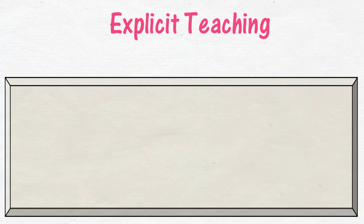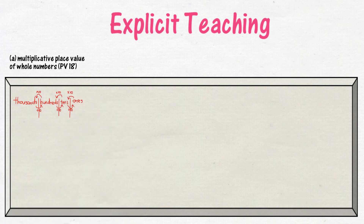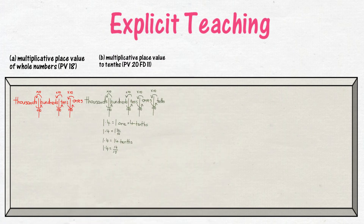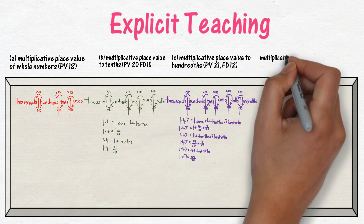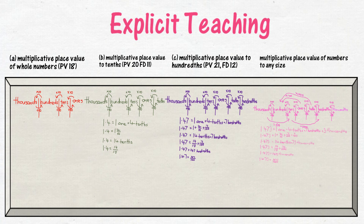Begin the explicit teaching using questioning at the lowest level of understanding, then proceeding through other levels. Using a different colour for each level allows students to identify and name their level by colour. For example: A. Multiplicative place value of whole numbers; B. Multiplicative place value to tenths; C. Multiplicative place value to hundredths; and multiplicative place value of numbers to any size. This explicit teaching segment of the lesson literally takes 10 to 15 minutes.